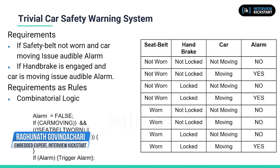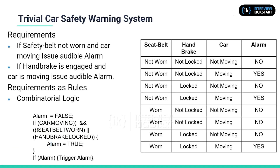Let's now look at another example: a trivial car safety warning system. The requirements are very simple. There are two requirements: first, if the safety belt is not on when the car is moving, then an alarm should sound; similarly, if the handbrake is engaged and the car is moving, then the alarm should be sounded.